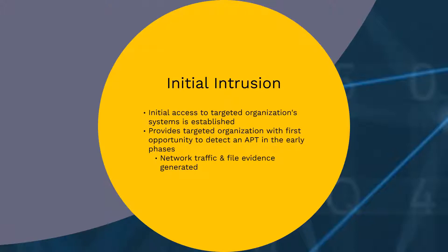Once the exploit's payload has been delivered, malicious code is executed. This initial access establishes a persistent listener within the organization's infrastructure. This phase provides the targeted organization with its first opportunity to detect an APT attack, as both network traffic and file evidence is generated by this initial intrusion.